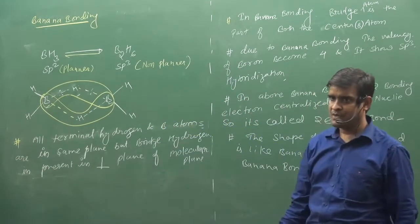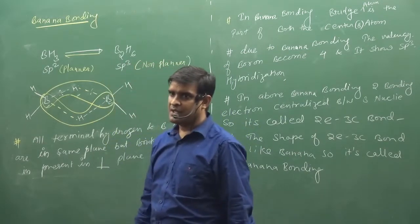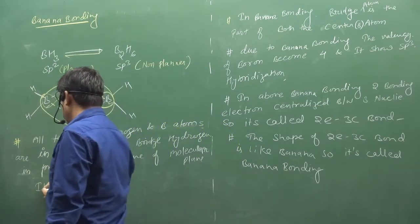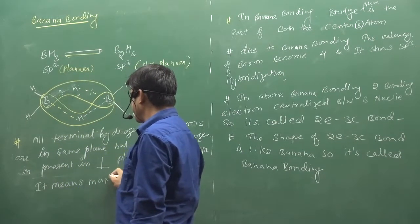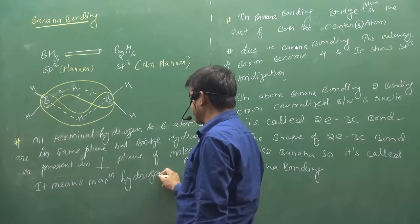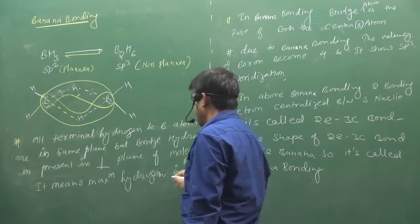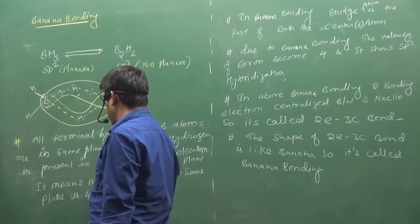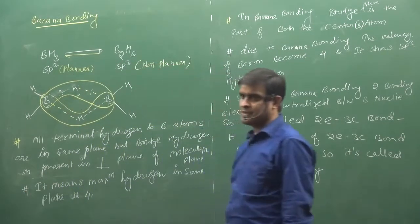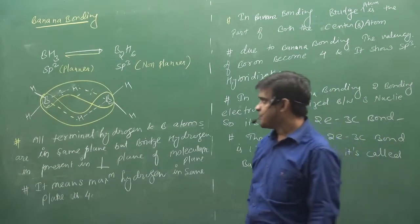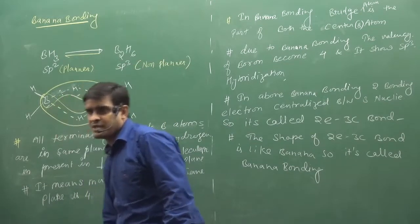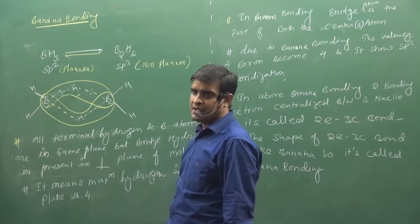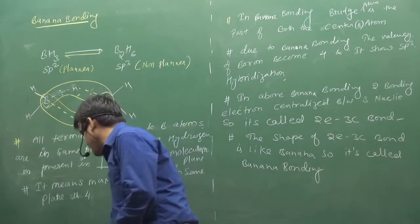So these will be completely outside. From this we will know: maximum hydrogen in the same plane - how many? Four or six? Four. Because the bridge hydrogens are outside the plane. Bridge hydrogen is attached with a weak bond with boron as compared to terminal hydrogen. So bond length of boron-hydrogen bridge is comparatively more (higher). So this is one key point about banana bonding.